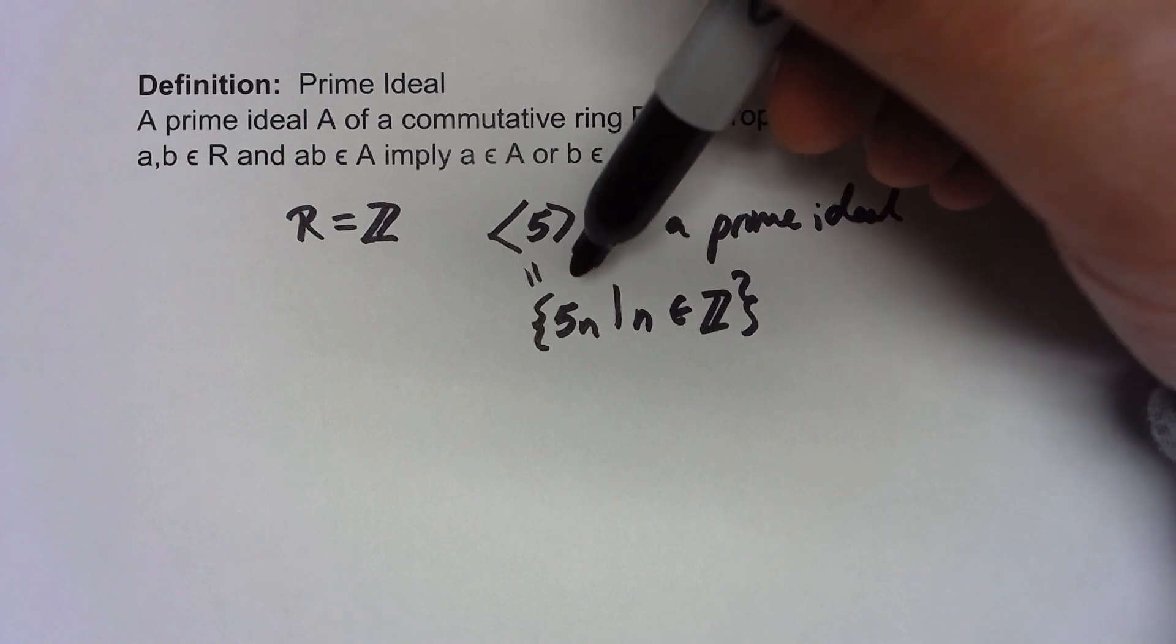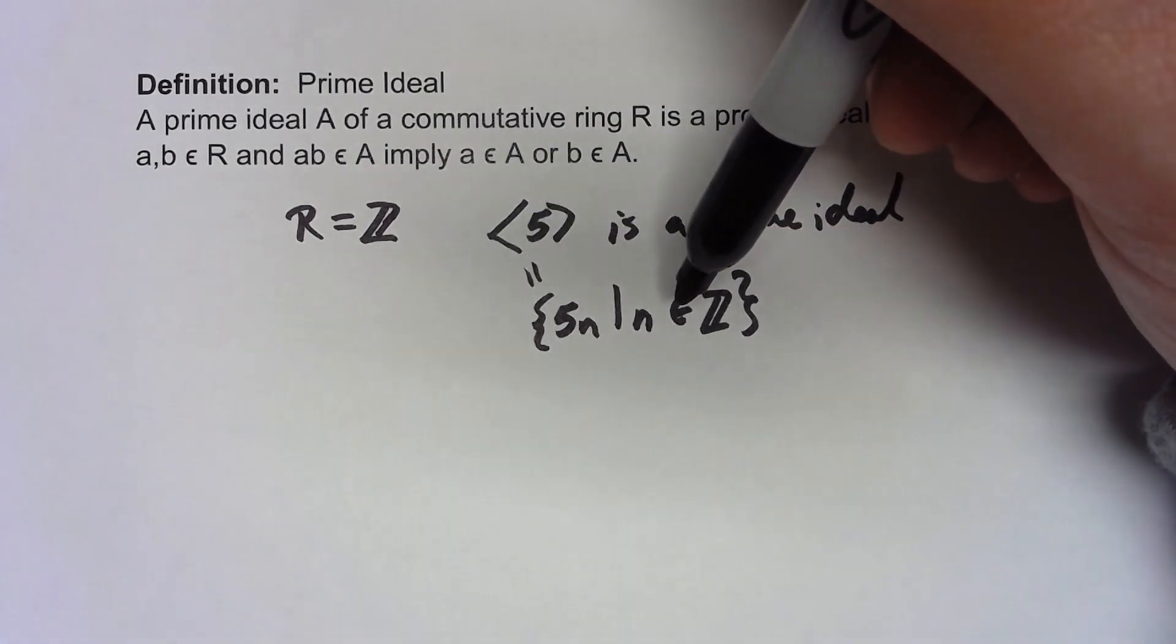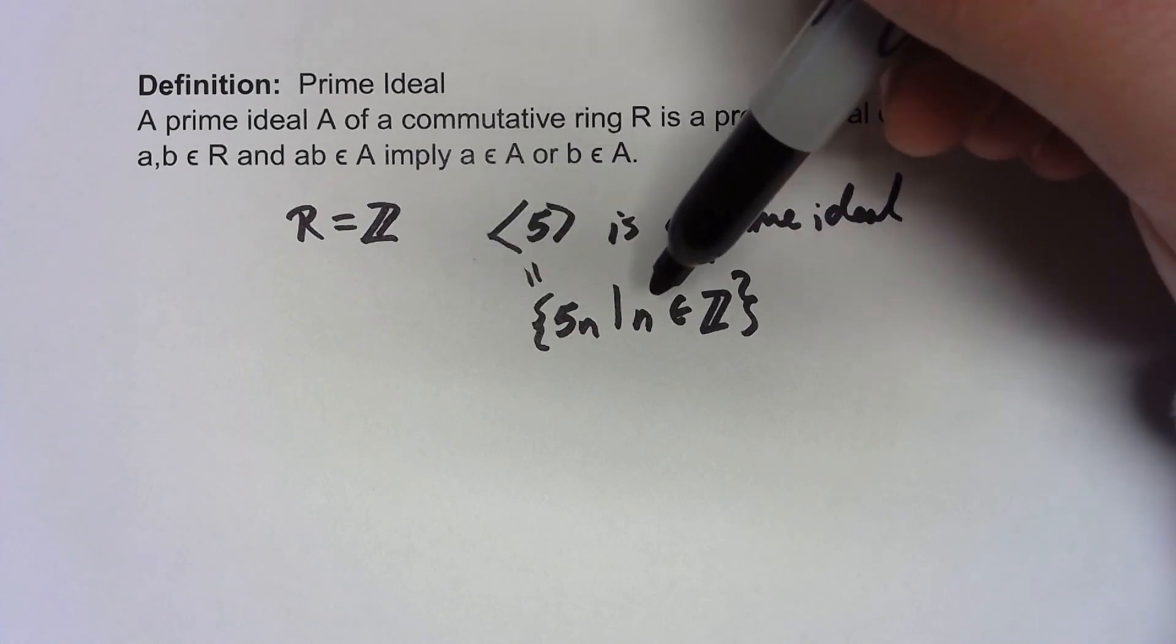The whole idea is if you multiply two integers and get a multiple of 5, one of those things had to be a multiple of 5.